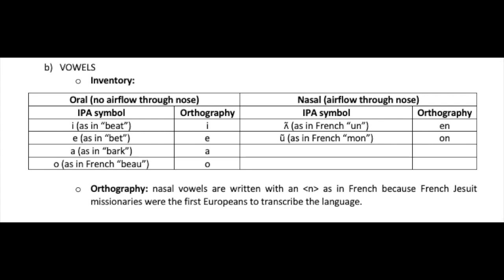Let us now look at the vowels of Mohawk. There are four oral vowels — where there is no airflow through the nose: I as in beat, E as in bet, A as in bark, and O as in French 'beau.' There are also two nasal vowels, where there is airflow through the nose: UN as in French 'un,' and ON as in French 'mon.' Nasal vowels are written with an N, as in French, because French Désert missionaries were the first Europeans to transcribe the language.